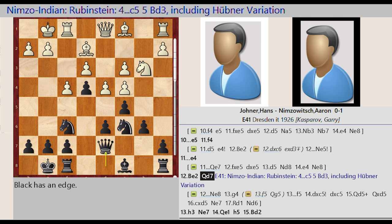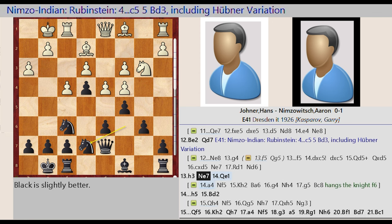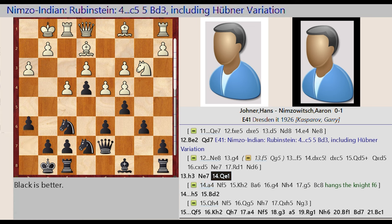Qd7, e4. This is the Nimzo-Indian Rubinstein 4.c5 5.Bd3 including Hubner variation. h3, Ne7, Qe1, h5.